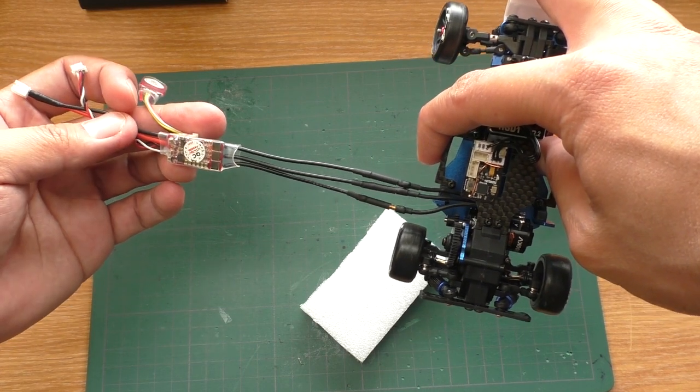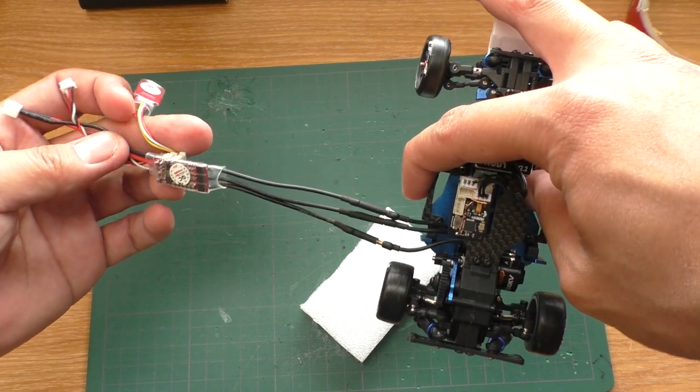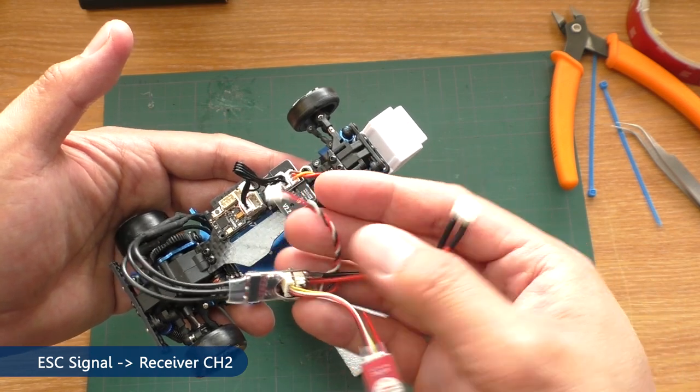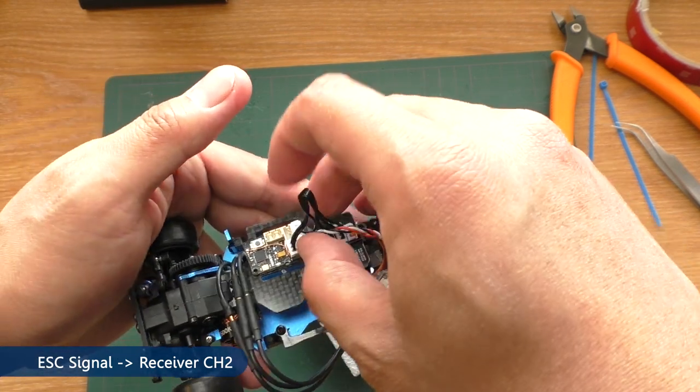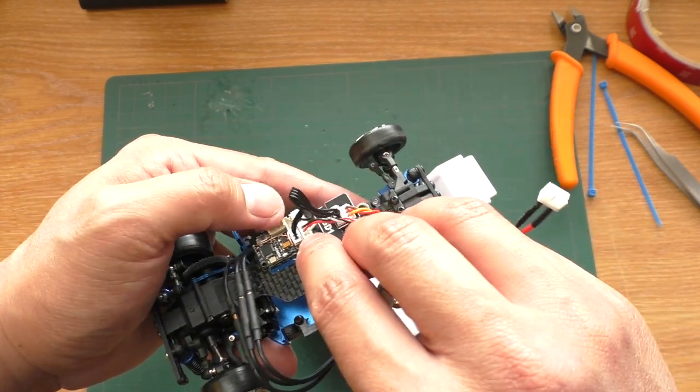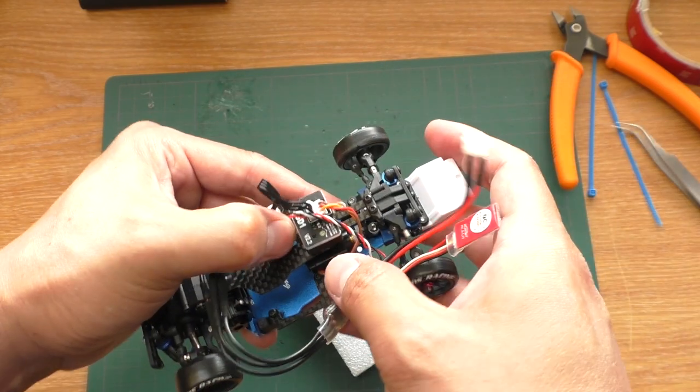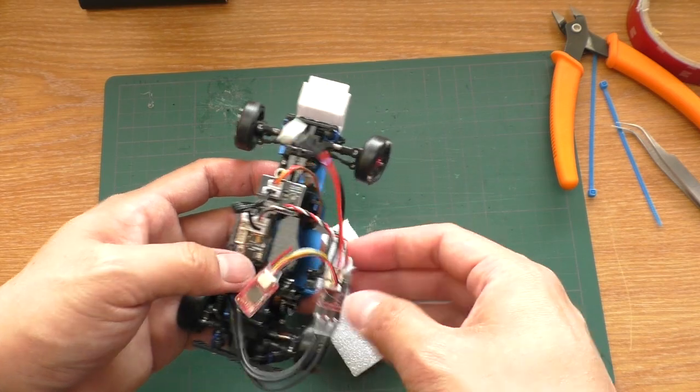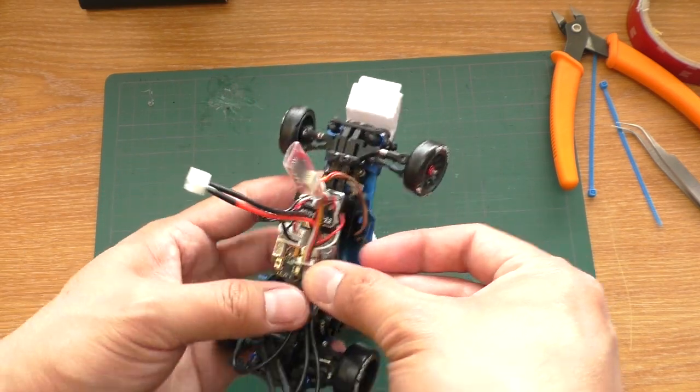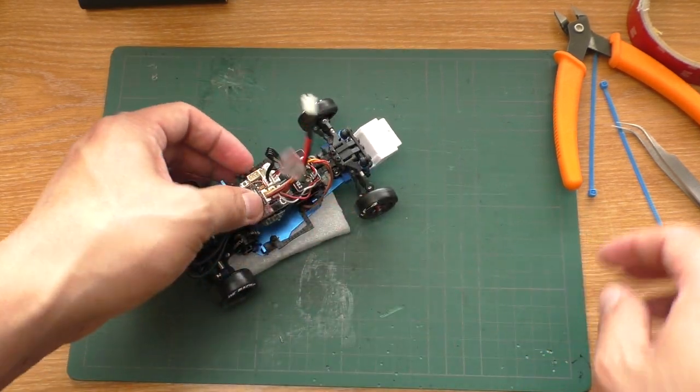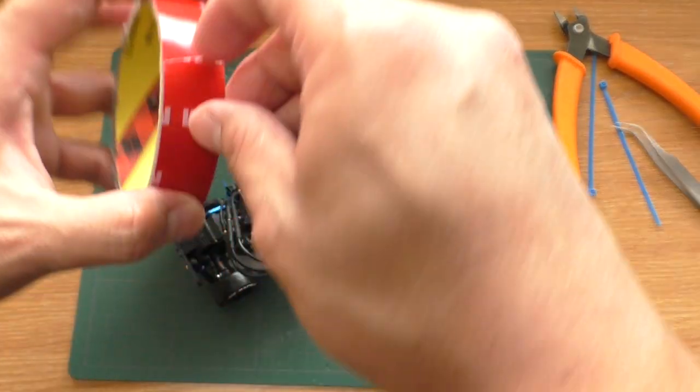Just like that. And next, I'm going to connect this plug to the receiver channel 2. It can only go in one way, so you can't mess it up. And then, let's put this on the car. Now I'm going to stick it down with a double-sided tape.